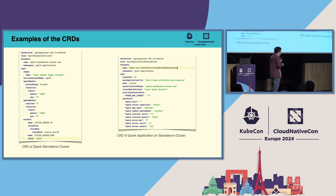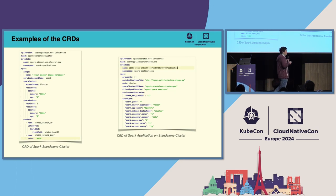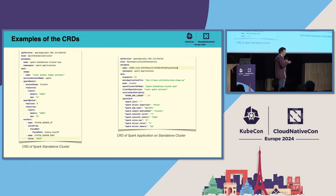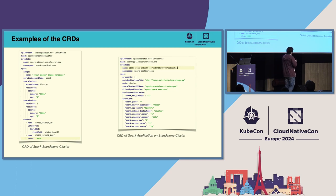Here are examples of the two new CRDs. On the left is the SparkStandaloneCluster CRD — the user only needs to specify the master and worker resources, and a new standalone cluster will be created. On the right is the SparkApplicationOnStandalone CRD — it is pretty similar to the original Spark operator CRD definitions, keeping most fields like main application file, environment variables, and Spark conf. The only new field added is the Spark cluster service name, to identify which standalone cluster the application will run on.